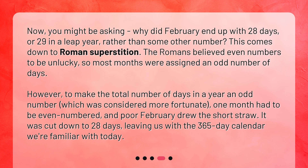Now, you might be asking, why did February end up with 28 days, or 29 in a leap year, rather than some other number? This comes down to Roman superstition. The Romans believed even numbers to be unlucky, so most months were assigned an odd number of days. However, to make the total number of days in a year an odd number — which was considered more fortunate — one month had to be even numbered, and poor February drew the short straw. It was cut down to 28 days, leaving us with the 365-day calendar we're familiar with today.